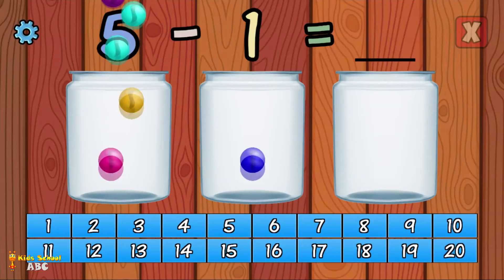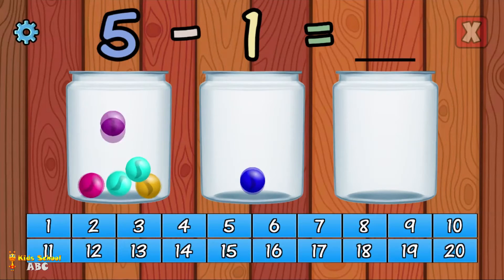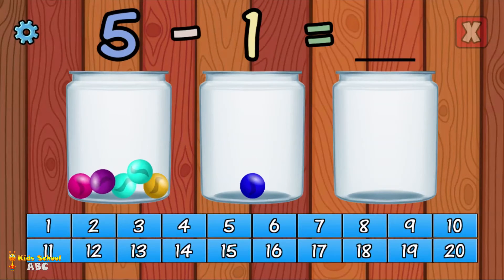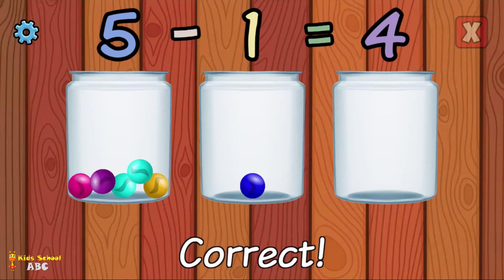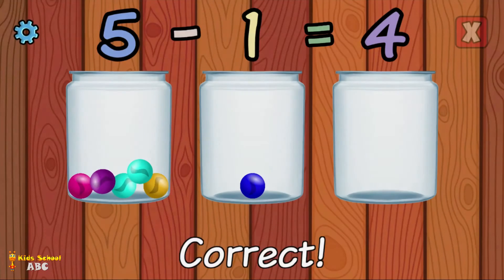What is 5 minus 1? Correct! 5 minus 1 equals 4.